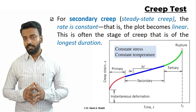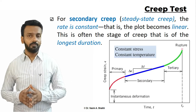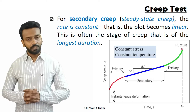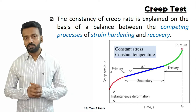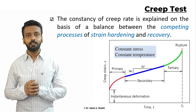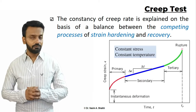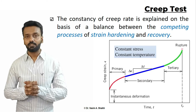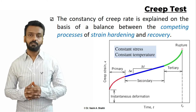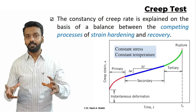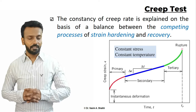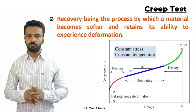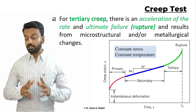The second stage of creep is the secondary stage, also known as steady-state creep. Here the creep rate is constant throughout, and this is the longest stage. The creep rate is constant because competing processes are occurring: strain hardening takes place and is immediately recovered by the recovery process. Since creep occurs at elevated temperature, and recovery also occurs at elevated temperature, the strain hardening is continuously nullified by recovery, making the material softer and allowing further deformation.